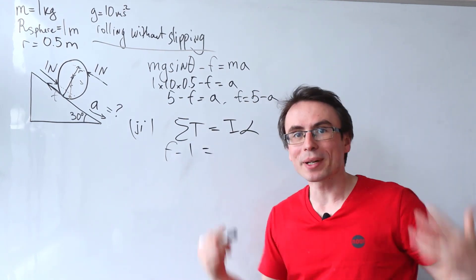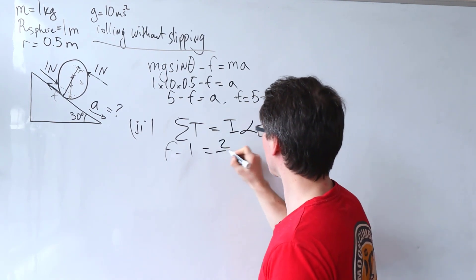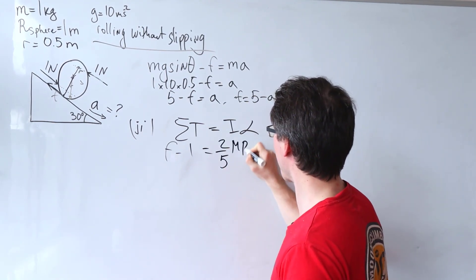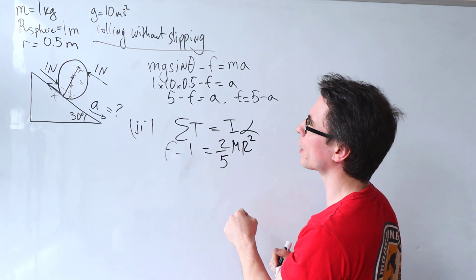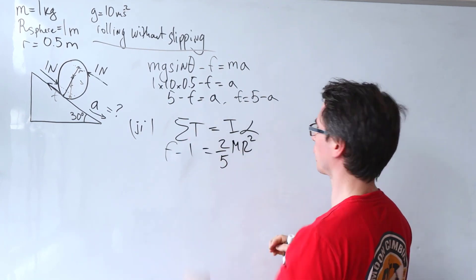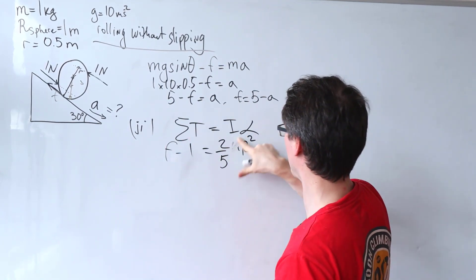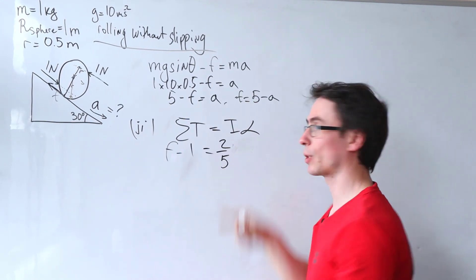We're going to set that equal to the moment of inertia of a sphere, which is just equal to 2/5 mr squared. Hang on a minute, the mass is just 1 kilogram. The radius of the sphere is just 1, so this whole thing here will just vanish.